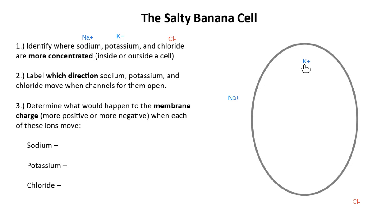When we talk about neuron signaling, we use channel proteins to move things. Do channel proteins do active or passive transport? Whether it's a leakage channel or a gated channel, channel proteins always do passive transport — always going from high to low concentration.